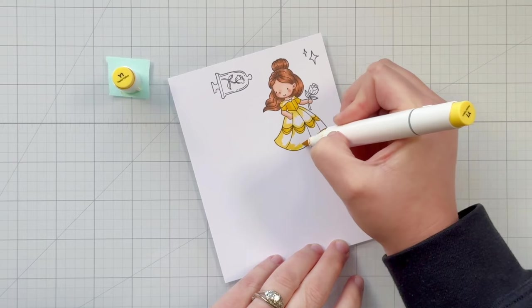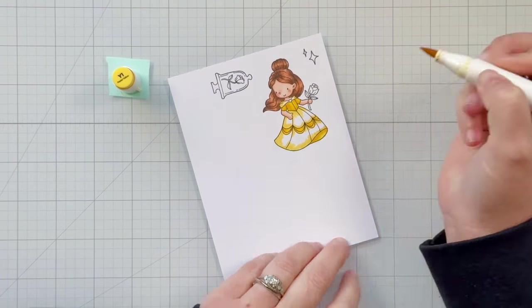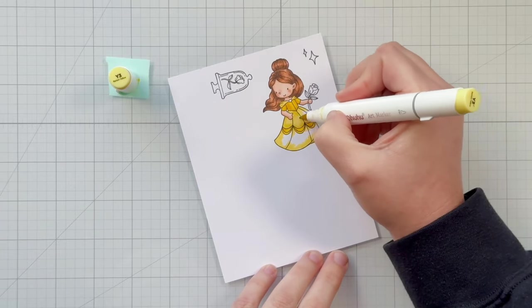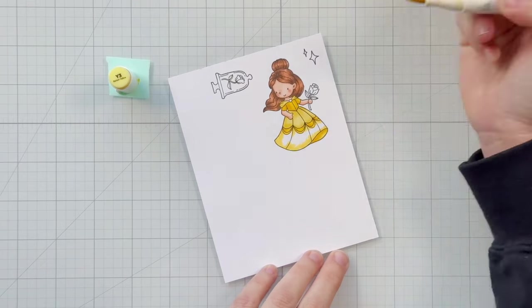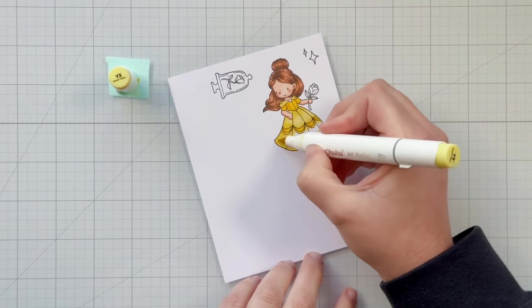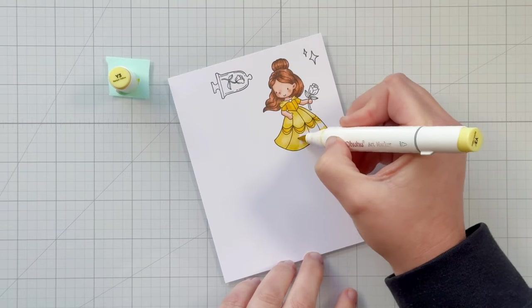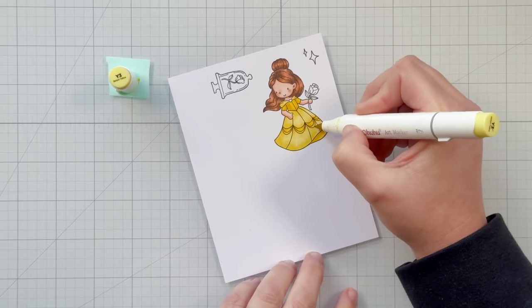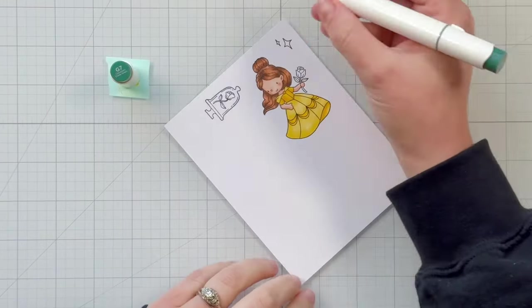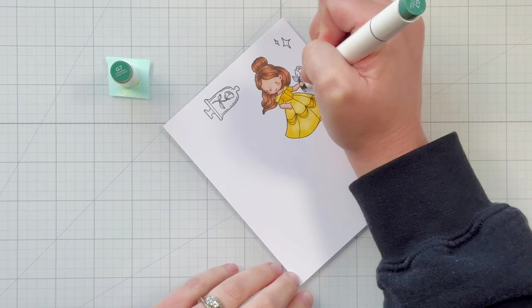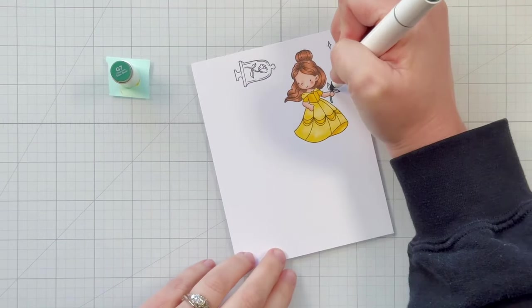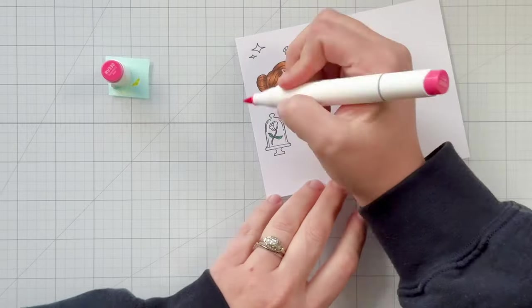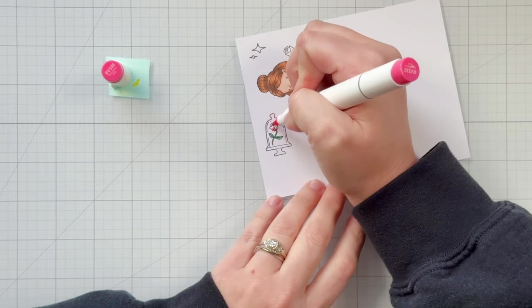These are now Ohuhu Art Markers. I think I have all of the colors for these, so I like to mix and match to find really good color combinations. Another reason I like to leave coloring in my video is so if you have Ohuhu Art Markers and need help with color combinations, I hope this will inspire you. I'm using YR33 and Y2 to be the darker yellows of her dress.